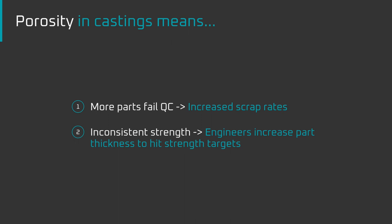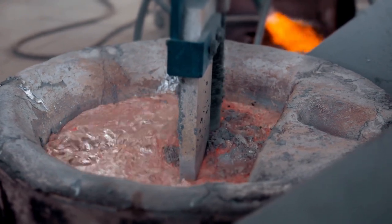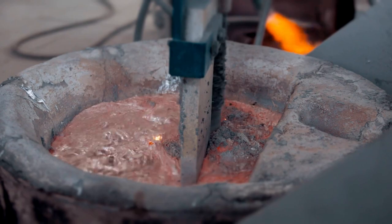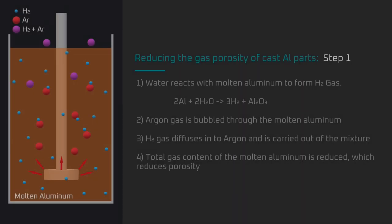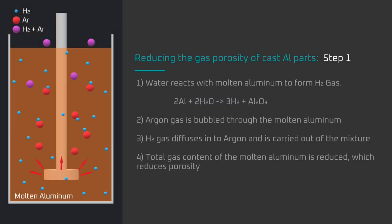Was Tesla able to somehow reduce the porosity of their Gigacastings? In short, yes. The first source of gas, and therefore porosity, in aluminum castings is that molten aluminum readily reacts with atmospheric water vapor and water in or on the raw materials to form hydrogen gas that becomes dissolved in the molten aluminum. The aluminum industry solves this problem by injecting argon gas into the molten aluminum. The hydrogen gas preferentially diffuses into the argon gas, and as the argon bubbles out of the molten aluminum, it takes the hydrogen gas with it. Alex Voigt has confirmed that Tesla is using this argon gas process. Bubbling argon gas through the molten aluminum appears to be common in the casting industry and not unique to Tesla.